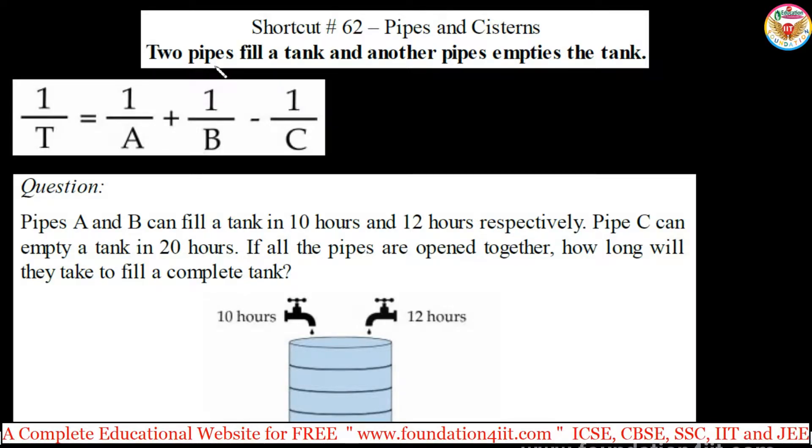In pipes and cisterns, two pipes fill the tank and another pipe empties the tank. For these types of cases, 1/T equals 1/A plus 1/B, which are filling the tank, minus 1/C, which empties. The emptying term is negative because it's doing negative work.